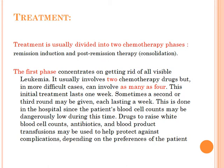Treatment is usually divided into two chemotherapy phases: remission induction and post-remission therapy. The first phase concentrates on getting rid of all visible leukemia and usually involves two chemotherapy drugs, but in more difficult cases can involve as many as four. This initial treatment lasts one week, and sometimes a second or third round may be given, each lasting a week. This is done in hospital since the patient's blood cell counts may be dangerously low, and drugs to raise white blood cell counts, antibiotics, and blood product transfusions may be used to help protect against complications.